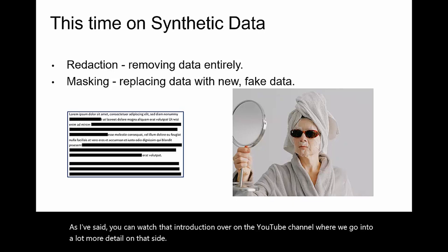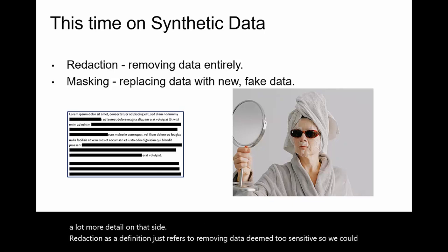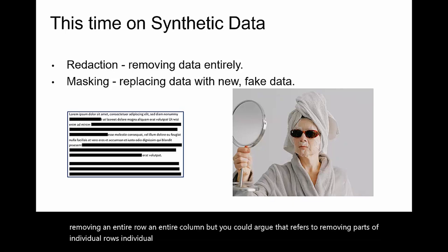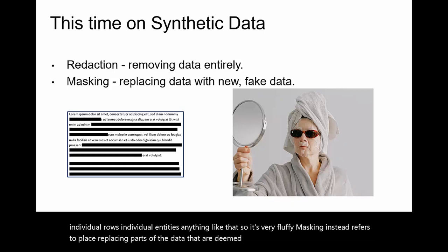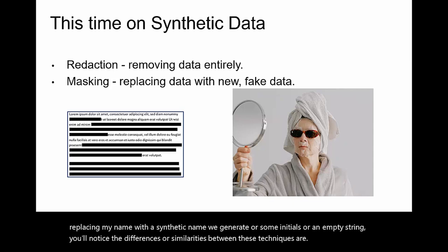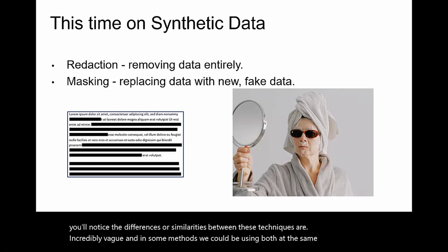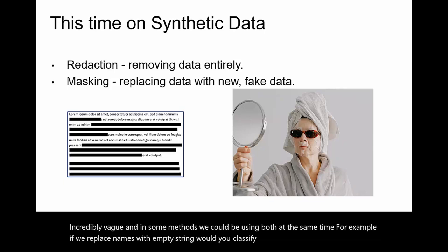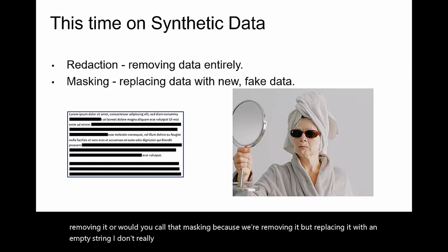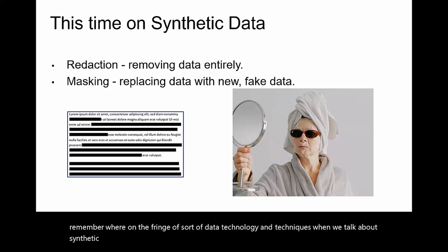Redaction as a definition just refers to removing data deemed too sensitive — removing an entire row, an entire column, or parts of individual rows, individual entities. Masking instead refers to replacing parts of the data deemed too sensitive. For example, replacing a name with a synthetic name we generate, some initials, or an empty string. The differences or similarities between these techniques are incredibly vague, and in some methods we could be using both at the same time. We're on the fringe of data technology when we talk about synthetic data, so things do get a little fluffy.